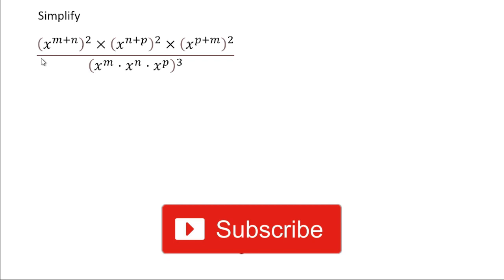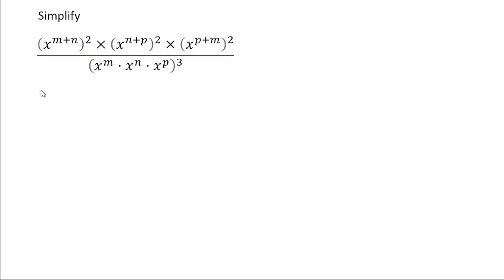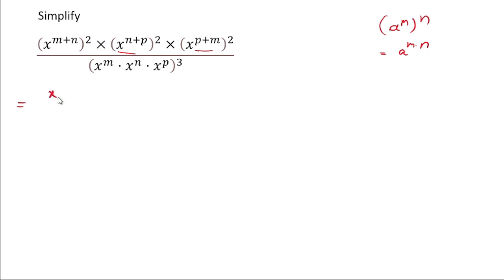For solving problems related to powers and exponents, we find the pattern: x to the power (m+n), whole to the power 2. This is a similar pattern throughout. We use the rule that a to the power m, whole to the power n, equals a to the power m multiplied by n. So likewise we write x to the power 2(m+n).